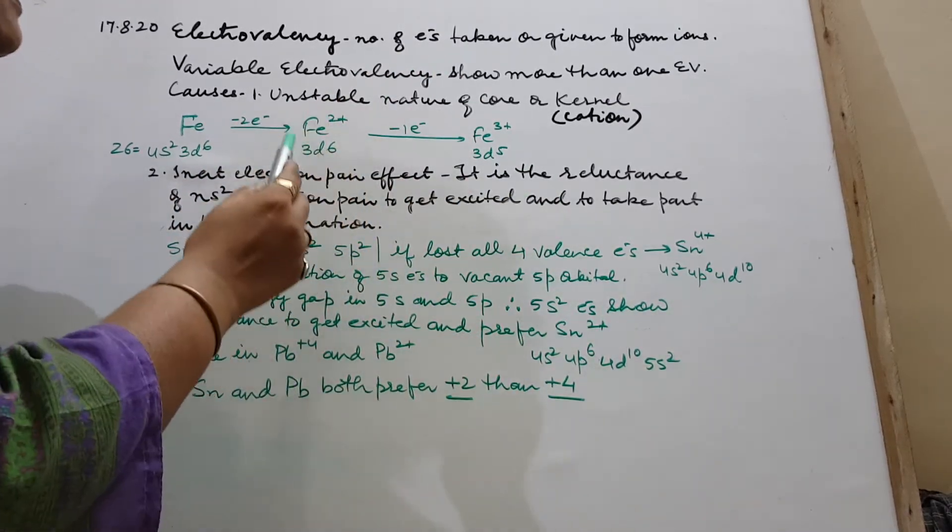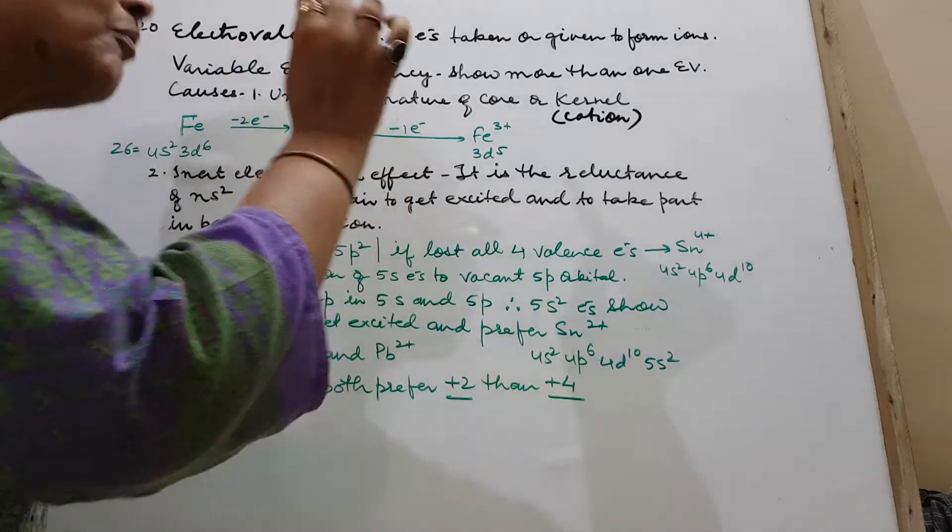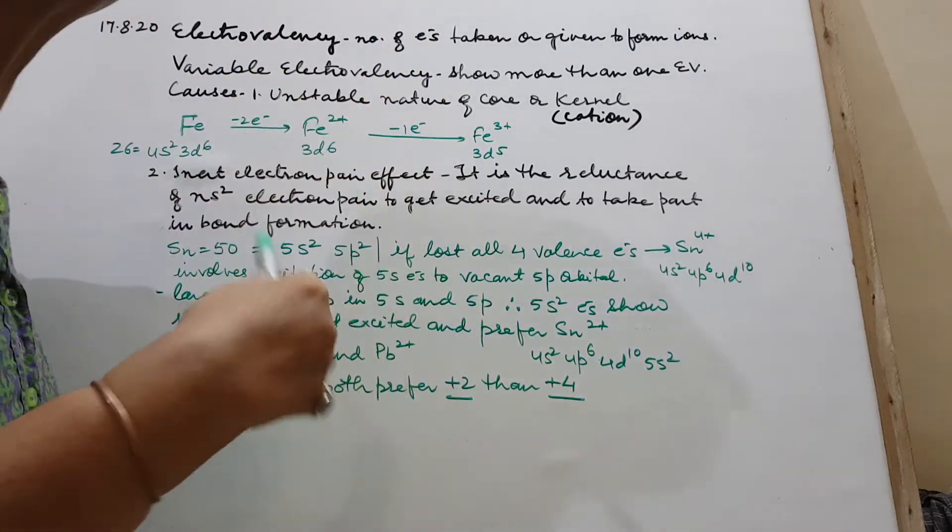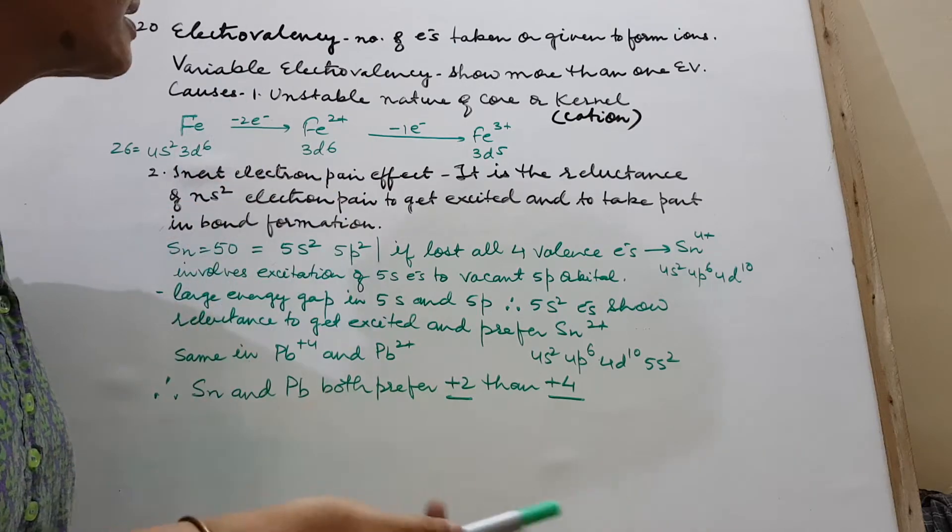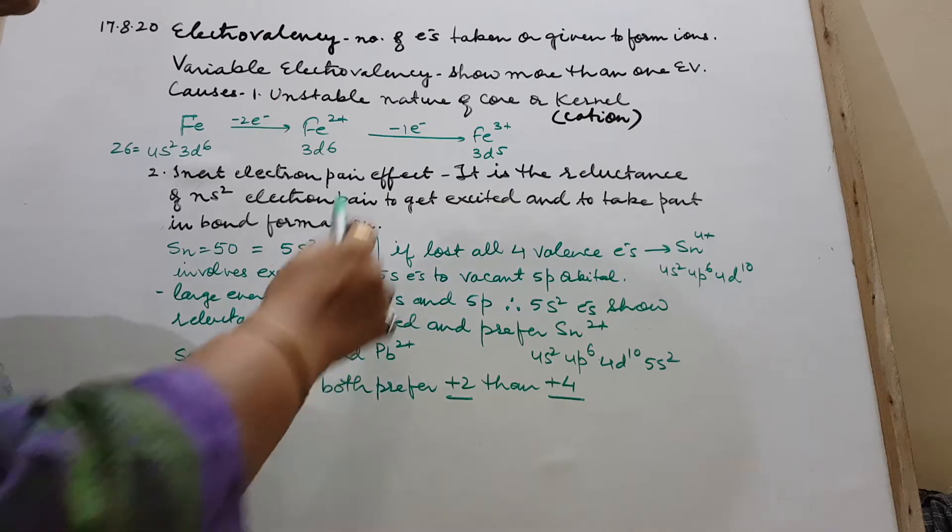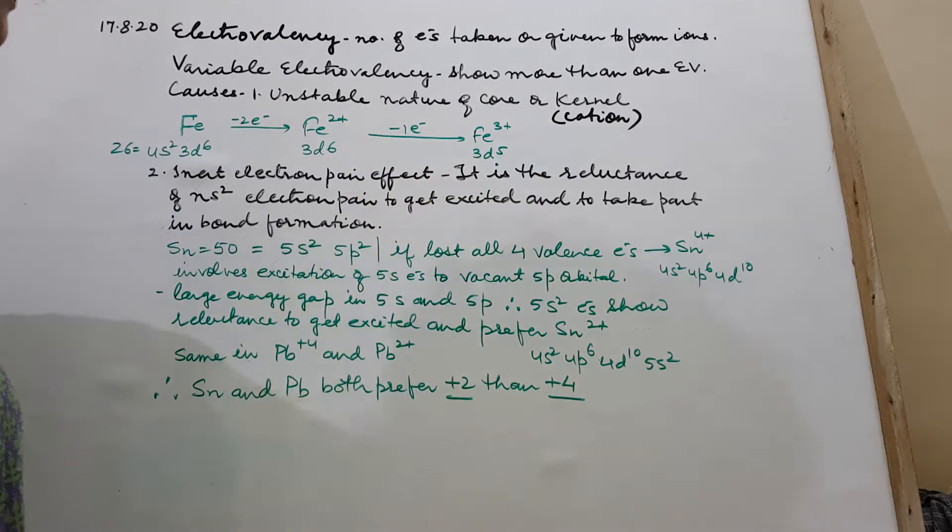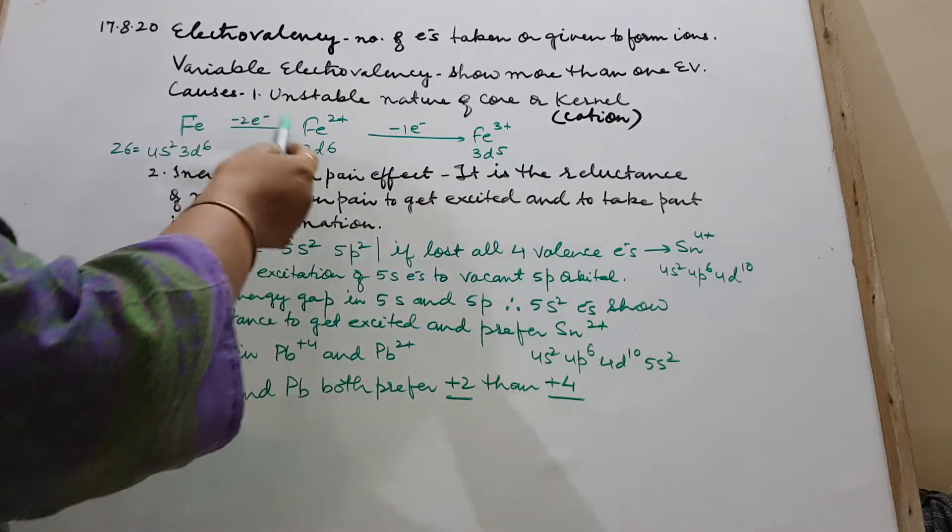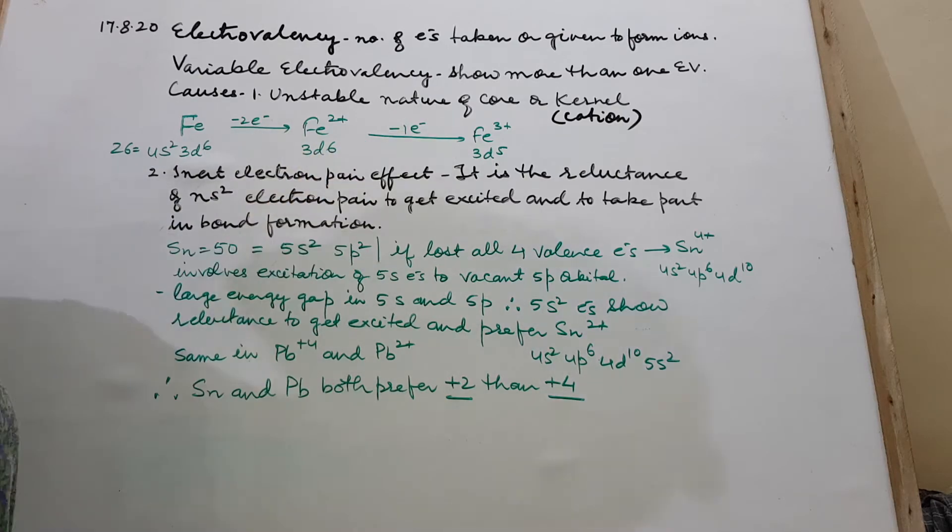So this ferrous has tendency to give out further one more electron and readily does it. Gives out one more electron and now gets converted to 3d5 and gets converted to ferric.